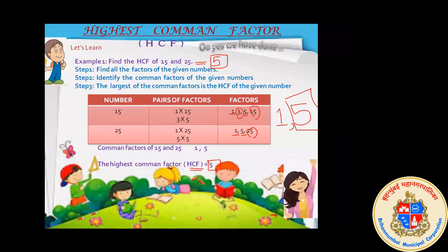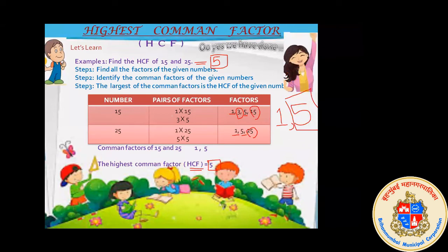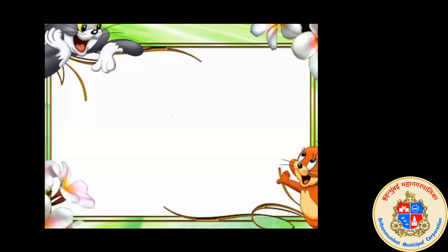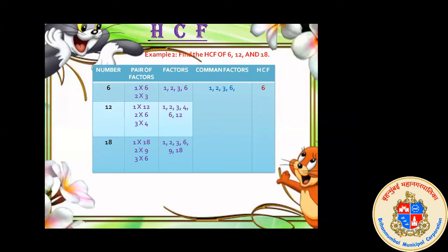We will see one more sum. Find the HCF of 6, 12, and 18. In the previous problem we found the HCF of 2 numbers; now we are finding the HCF of 3 numbers. First, we find the factors individually. Factors of 6 are: 1, 2, 3, and 6. Factors of 12 are: 1, 2, 3, 4, 6, and 12.